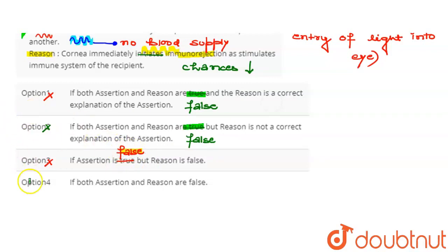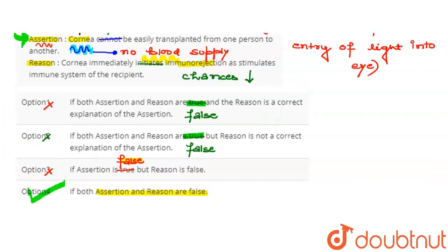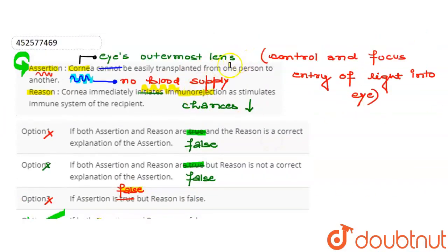The last option is: assertion and reason are both false. Yes, the appropriate answer is this option because both the assertion and reason statements are incorrect.